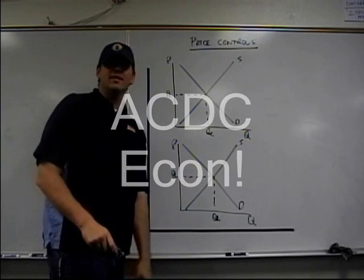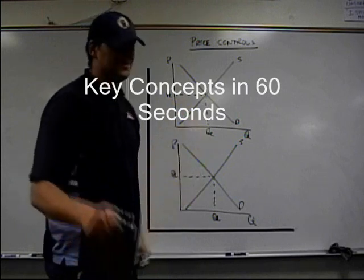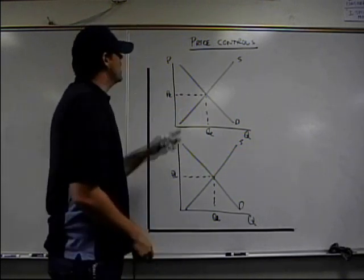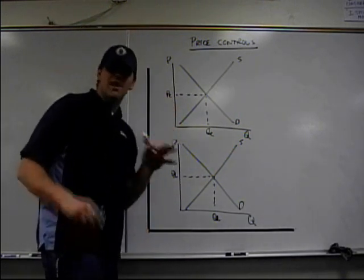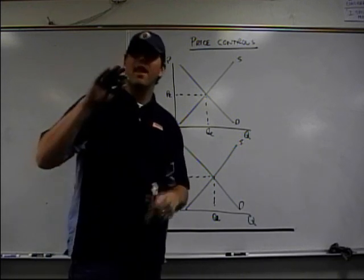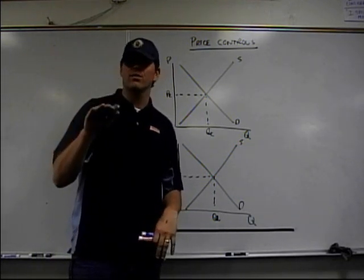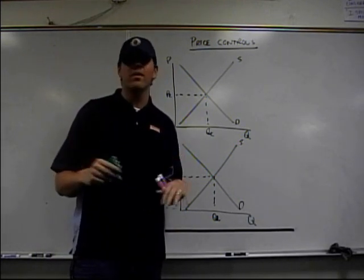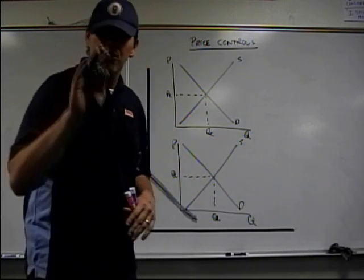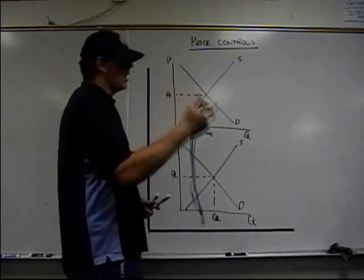I'm Mr. Clifford and this is ACDC Econ, Key Concepts in 60 Seconds. Today we're going to talk about price controls with supply and demand. Your teacher just taught you supply and demand. Now they're going to talk about ceilings and floors. It's on the AP test. It's all over the place. You've got to understand it. You've got to know what the effect is on the market. Here we go.